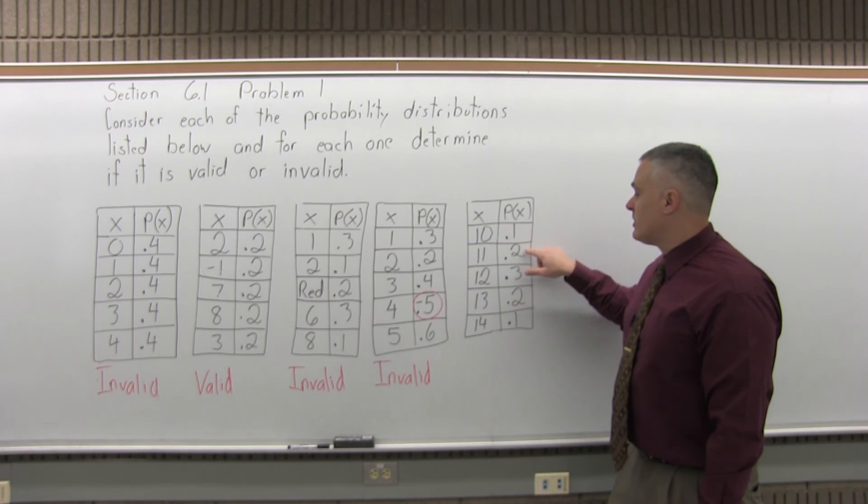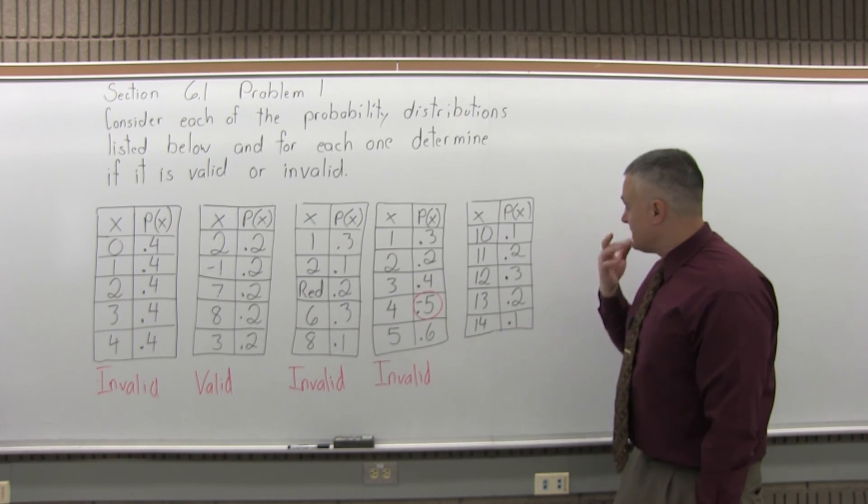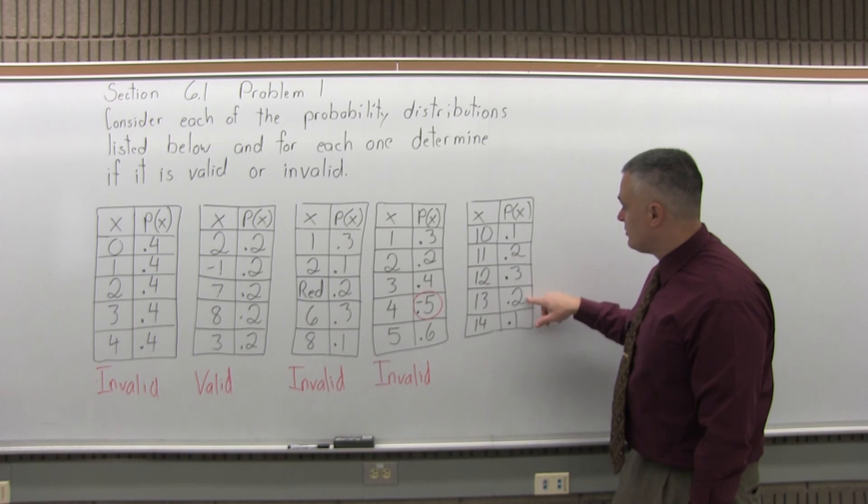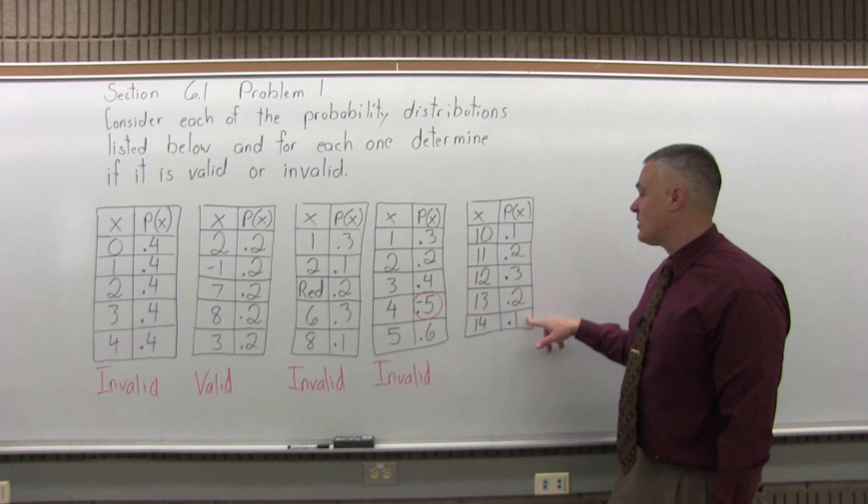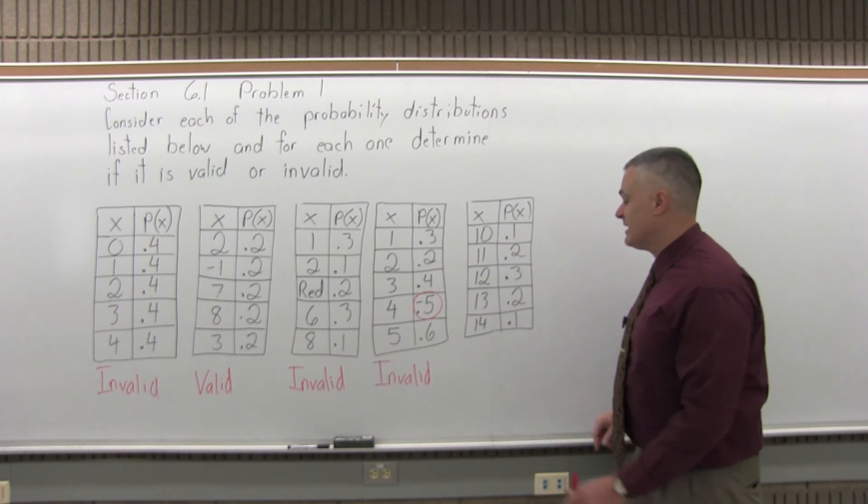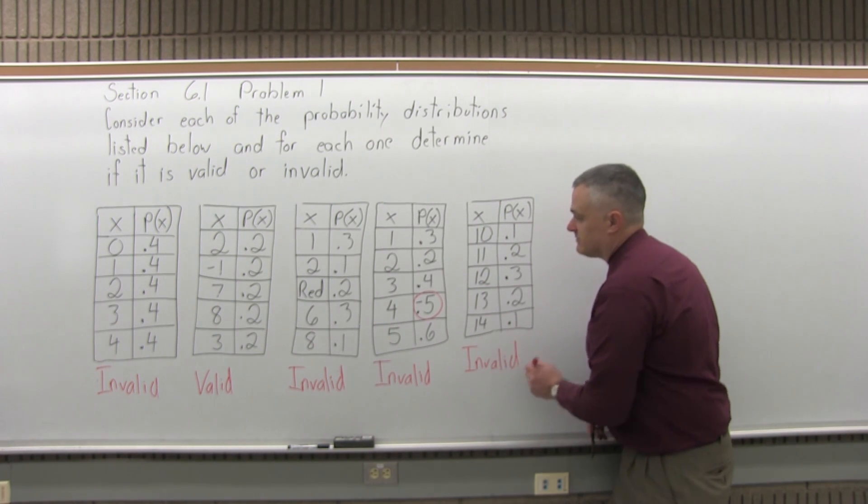Well, 0.1 and 0.2 is 0.3. 0.3 plus another 0.3 is 0.6. 0.6 and 0.2 is 0.8. 0.8 plus 0.1 is 0.9. Doesn't quite add up to 1.0, so it's invalid. It has to be 1.0.